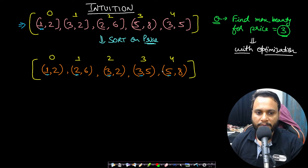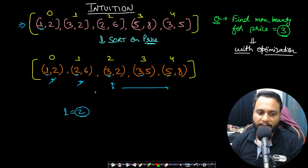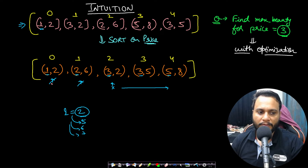So with items in non-decreasing price order, if our query price is 2, we start iterating and as soon as we see price 3, all prices to the right must also be greater than 2, so we can safely stop. This optimizes our runtime. However, if the queries have high values like 5, 6, 7, you might still end up iterating all items from left to right, giving O(Q*N) time complexity again.